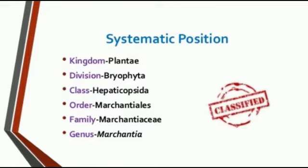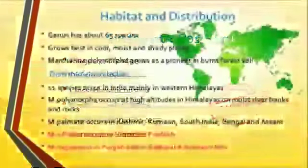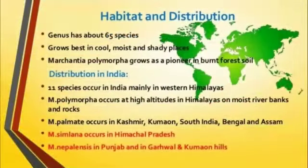In India, some species occur mainly in the western Himalayas. All over the world there are 60 species found in India. Marchantia polymorpha occurs at high altitudes of the Himalaya, on moist river banks and rocks.